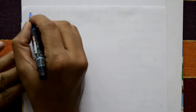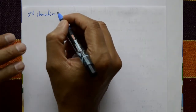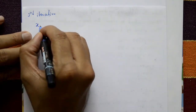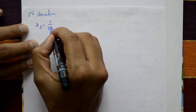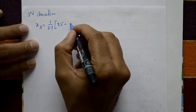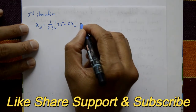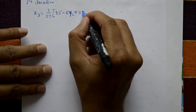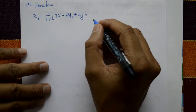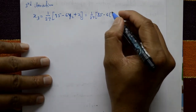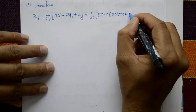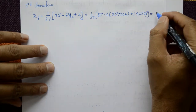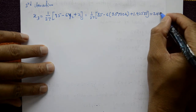Third iteration: x3 = (1/27)(85 − 6·y2 + z2) = (1/27)(85 − 6 × 3.57204 + 1.92585) = 2.42569.